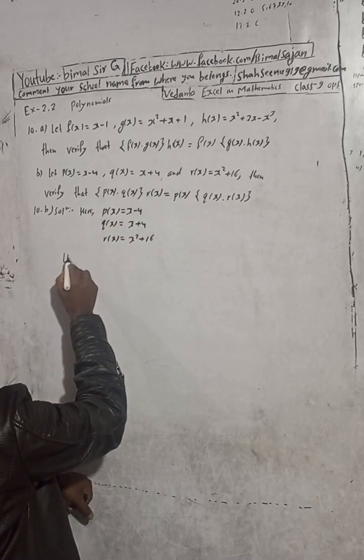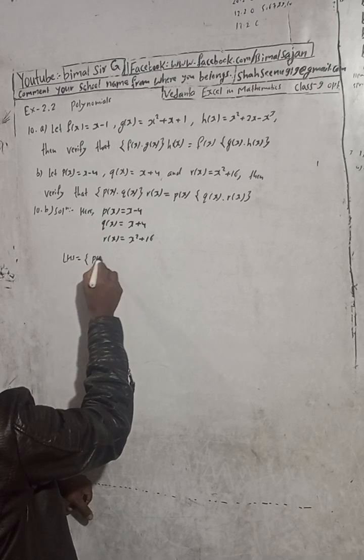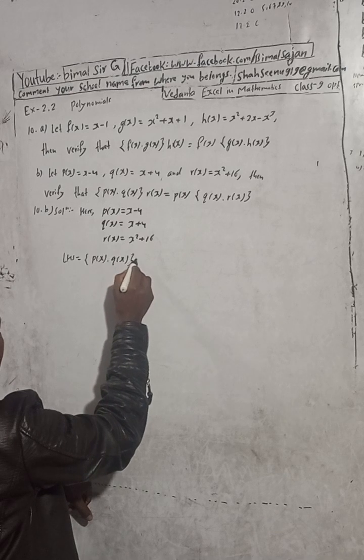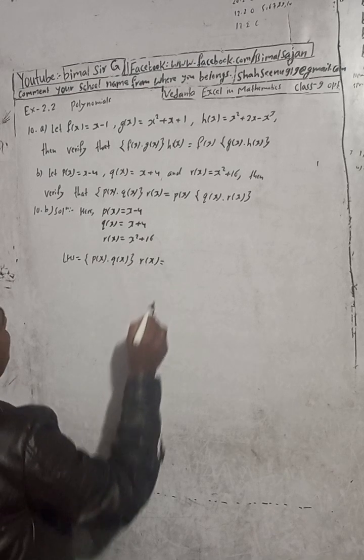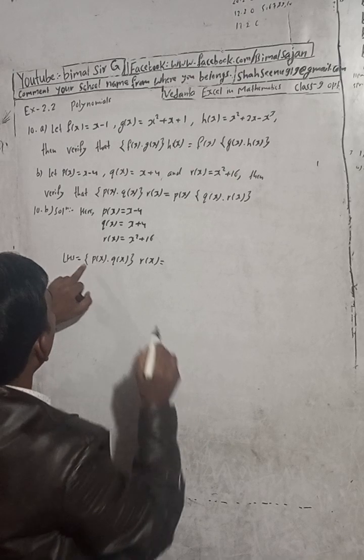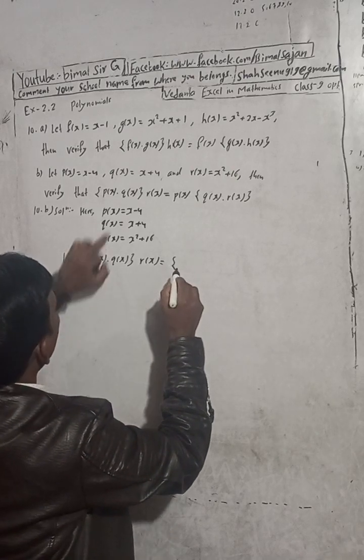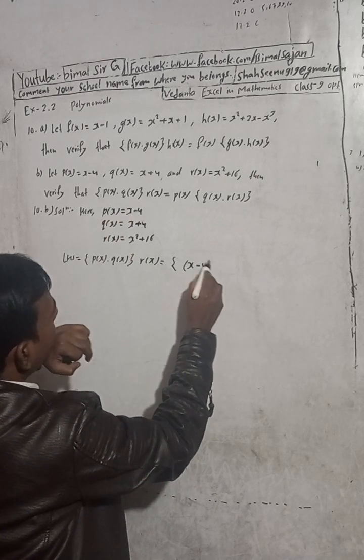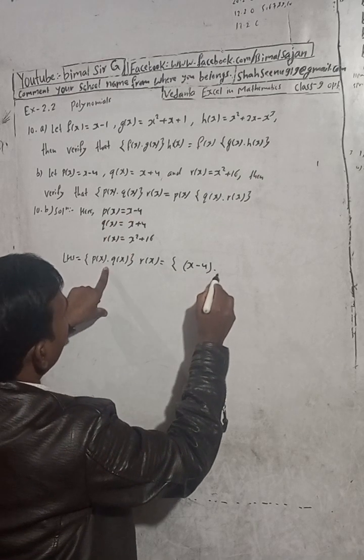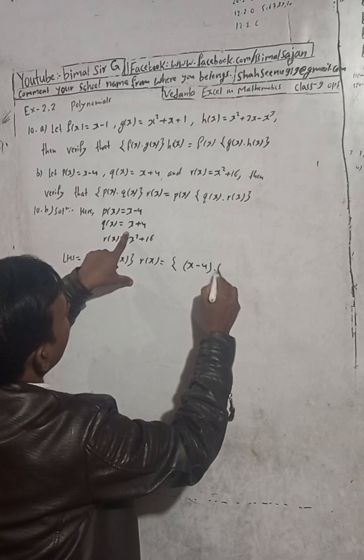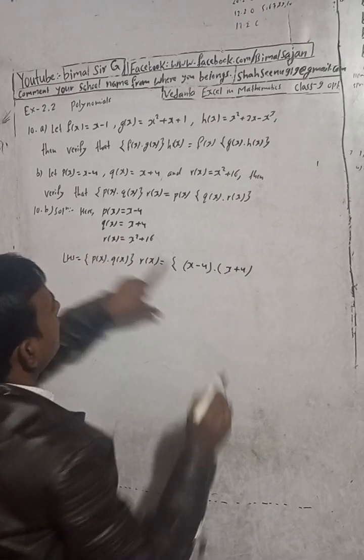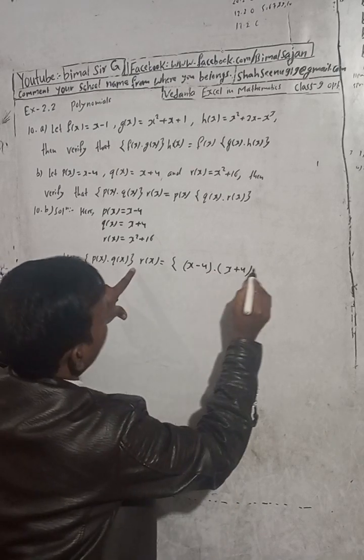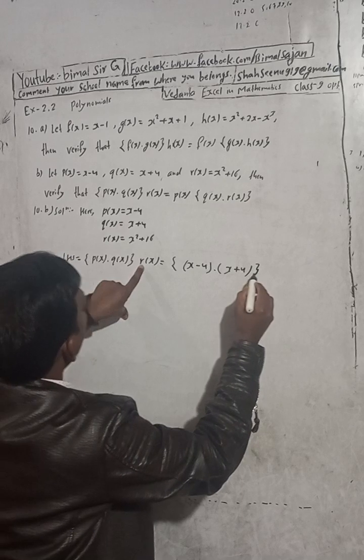LHS, this is called LHS. P(x) into q(x) plus r(x). LHS part means this is curly bracket, so put in curly bracket. And this p(x), so p(x) is here x minus 4. Since there are two terms, you have to give this a small bracket. And then into q(x) means what is the q(x): x plus 4.